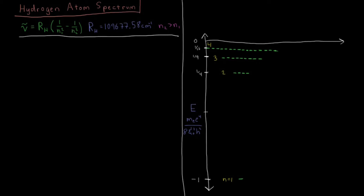We'll now revisit the hydrogen atom spectrum in terms of which transitions are allowed and which are forbidden, as a photon is absorbed between different energy levels. Near the beginning of this playlist, we looked at the Rydberg equation, or Rydberg formula, which, given two quantum numbers n1 and n2 — the principal quantum numbers of the hydrogen atom — predicts the frequency at which a photon will be absorbed for a given transition. This equation is written such that n2 is greater than n1, and the Rydberg constant has its value in units of wave numbers or inverse centimeters, which can be converted to other units like hertz.